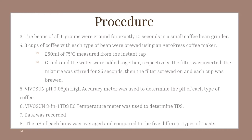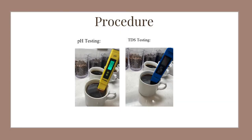The data was recorded, and the pH of each brew was averaged to compare to the different types of roasts. This picture depicts how I measured the pH and the total dissolved solids.